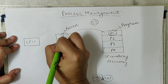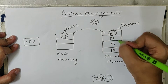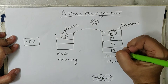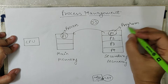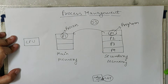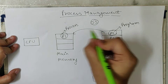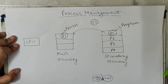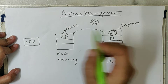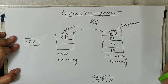Now the CPU picks this process and executes it. When the program is inside the secondary memory, it is known as a program. Once it is moved from secondary memory to main memory, this program is now known as a process. So, a program under execution is nothing but a process.